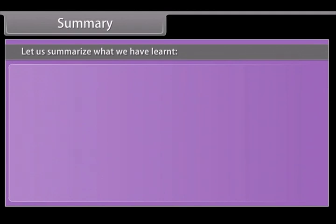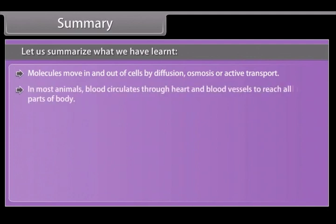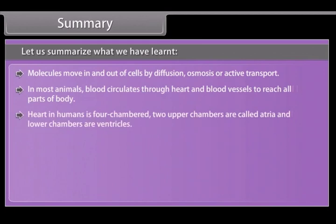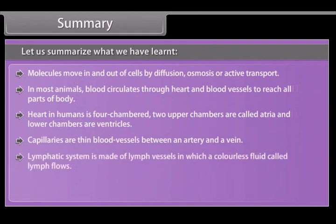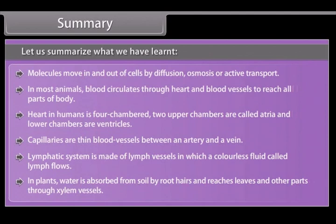Summary. Let us summarize what we have learned. Molecules move in and out of cells by diffusion, osmosis or active transport. In most animals blood circulates through heart and blood vessels to reach all parts of body. Heart in humans is four chambered, two upper chambers are called atria and lower chambers are ventricles. Capillaries are thin blood vessels between an artery and a vein. Lymphatic system is made of lymph vessels in which a colorless fluid called lymph flows. In plants water is absorbed from soil by root hairs and reaches leaves and other parts through xylem vessels.